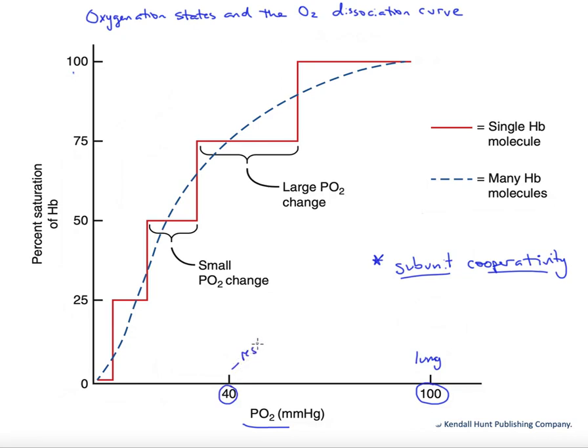If we begin to exercise, our tissue PO2 can fall, especially at the skeletal muscles. It might be down to about 20. But in general, our tissues are in this sort of 20 to 40 millimeters of mercury PO2 range.